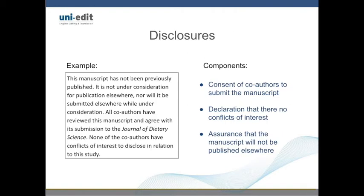The disclosure section typically includes several statements, which may include the following: 1. All co-authors have read this version of the manuscript and agree with its submission. 2. None of the co-authors have conflicts of interest to declare in relation to the study. 3. This manuscript has not been previously published, nor is it currently under consideration for publication by another journal. 4. This study will not be submitted to another journal while under consideration. Rephrase these statements in your own words, or exactly as required by your target journal if they have specific mandatory disclosure statements.